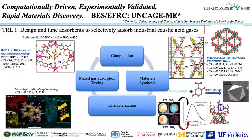Getting to what I really wanted to talk about today: where we are now is computationally driven, experimentally validated, rapid materials discovery. This is an Office of Science program called Uncage Me, led out of Georgia Tech. We're looking at the design and tuning of adsorbents to selectively absorb industrial caustic acid gases. We are in a very tight feedback loop where computational design leads to material synthesis and characterization, leading to mixed gas adsorption, which validates the computational work — enabled by the use of supercomputers at Sandia.